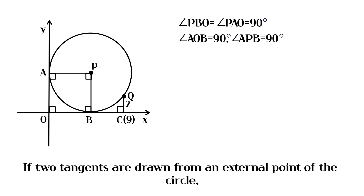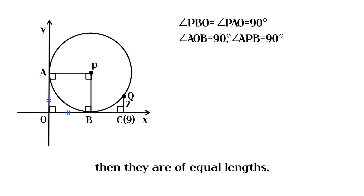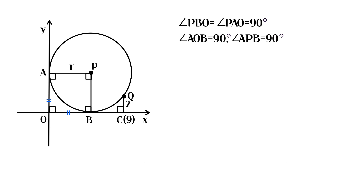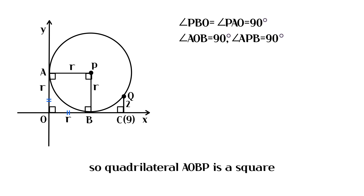If two tangents are drawn from an external point of the circle, then they are of equal lengths. So the four sides have the same length, which means quadrilateral AOBP is a square.